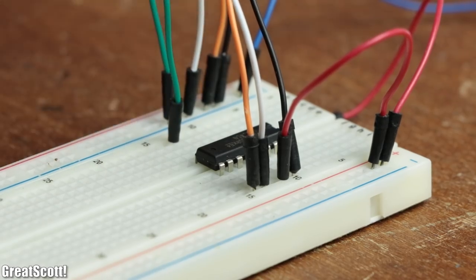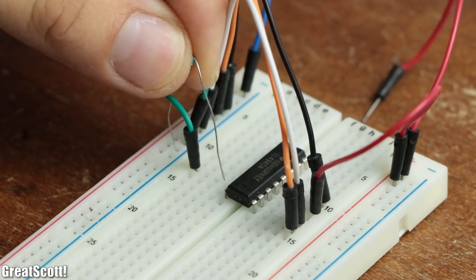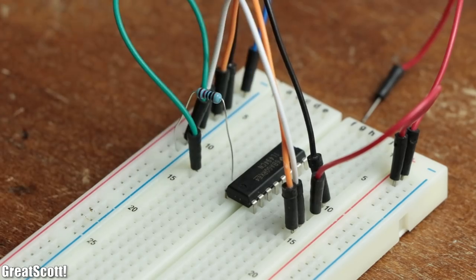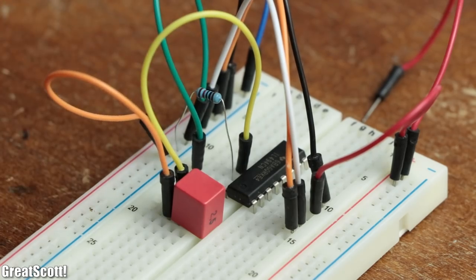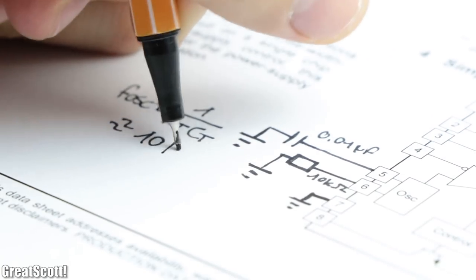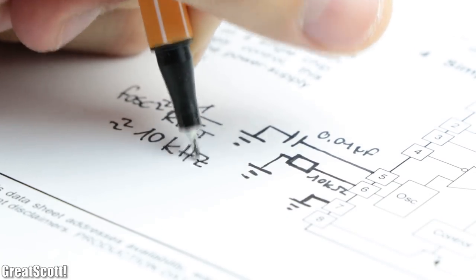By connecting its pins to VCC and ground like it shown here, we can connect a 10 kilo ohm resistor and a 0.01 microfarad capacitor to the oscillator pins in order to create a carrier frequency of around 10 kilohertz.